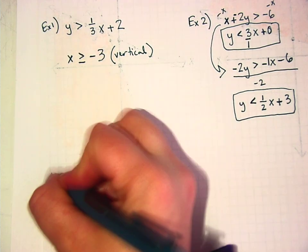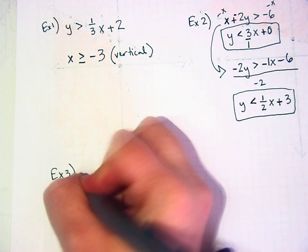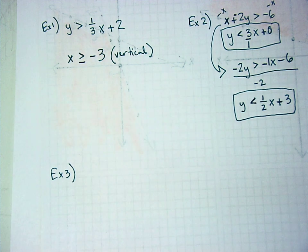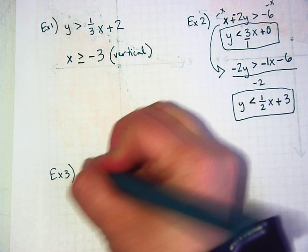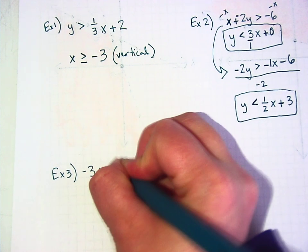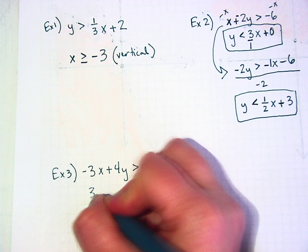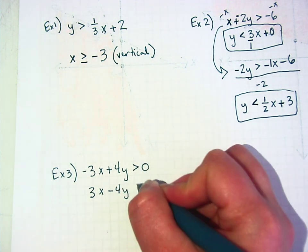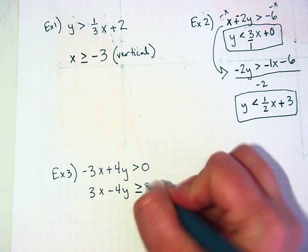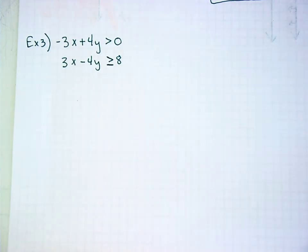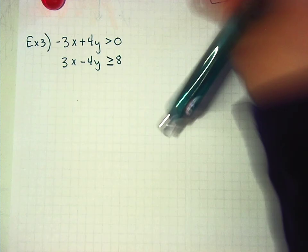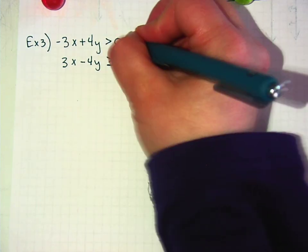Example 3, last one. Negative 3x plus 4y is greater than 0, and 3x minus 4y is greater than or equal to 8. Is this ready to graph? No. All right, let's start moving stuff over.